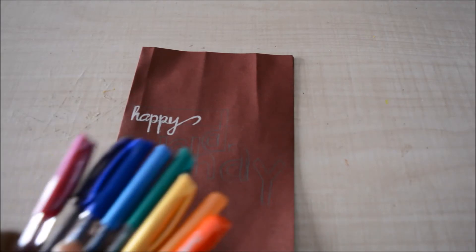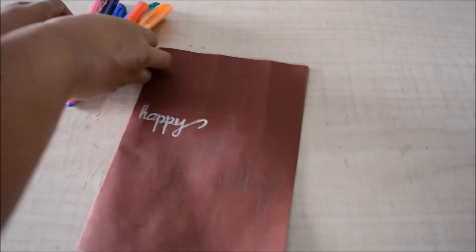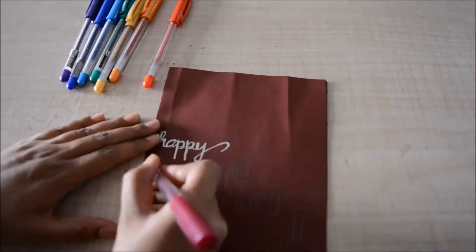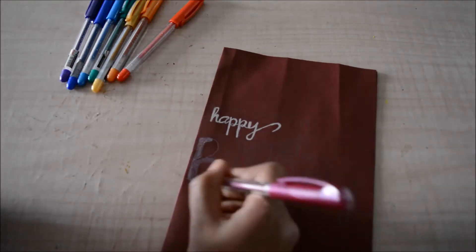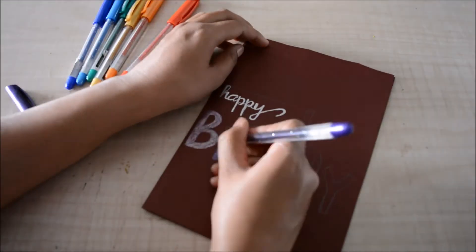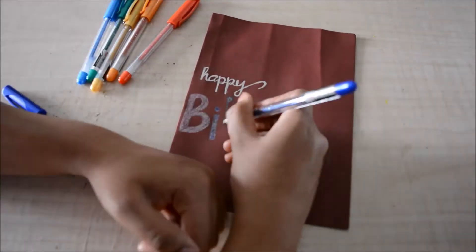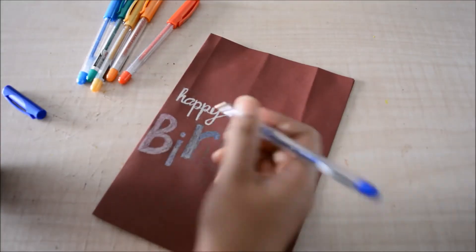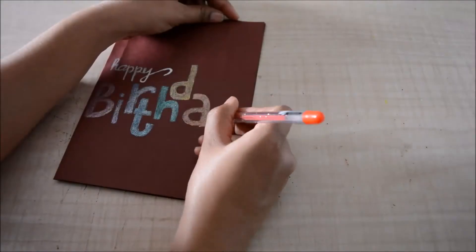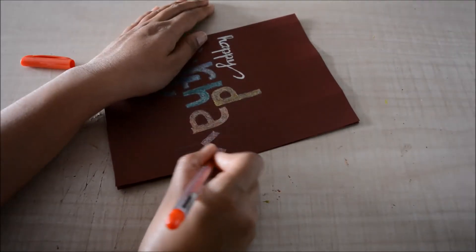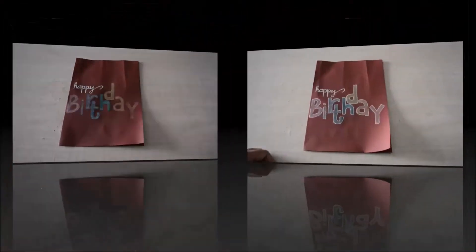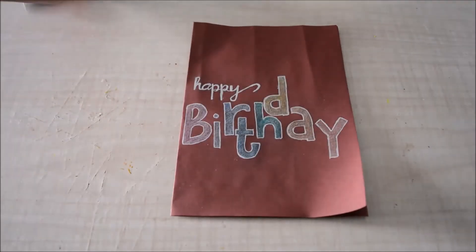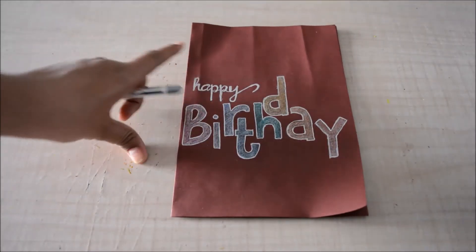Then once I'm done writing the letters of the word birthday, I'll fill each letter using these eight glitter pens. So I'll use a different pen for each letter. After filling the letters I even outlined them with the silver pen to make them pop.